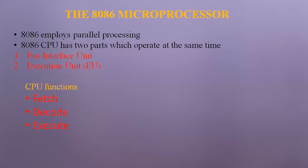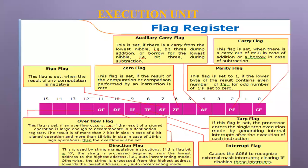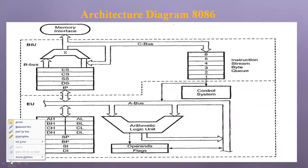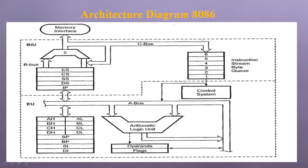The 8086 microprocessor architecture diagram shows it can be classified into two different units. The first part is called the Bus Interface Unit (BIU) and the second part is called the Execution Unit (EU). The Bus Interface Unit is responsible for fetch and decode, while execution is done with the help of the Execution Unit.